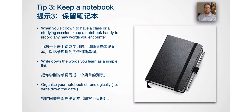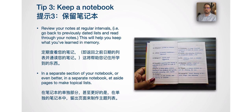Tip 3: Keep a notebook. When you sit down to have a class or study session, keep a notebook handy to record any new words you encounter. Write down words you learn as a simple list. Organize your notebook chronologically — that is, write down the date. Review your notes at regular intervals by going back to previously dated lists and reading through your notes. This will help you keep what you've learned in memory. In a separate section, or even better, a separate notebook, set aside pages to make topical lists.